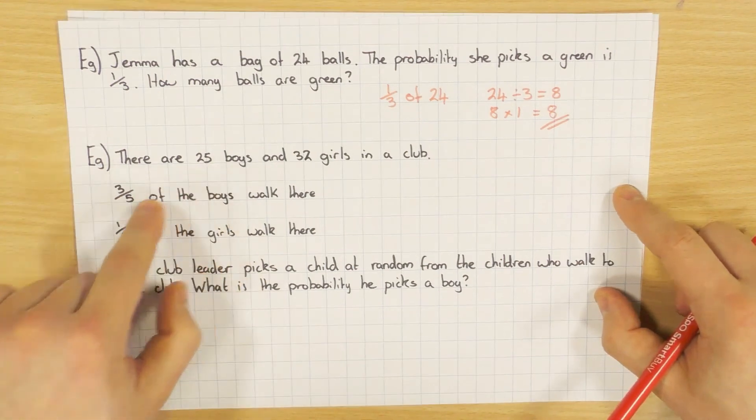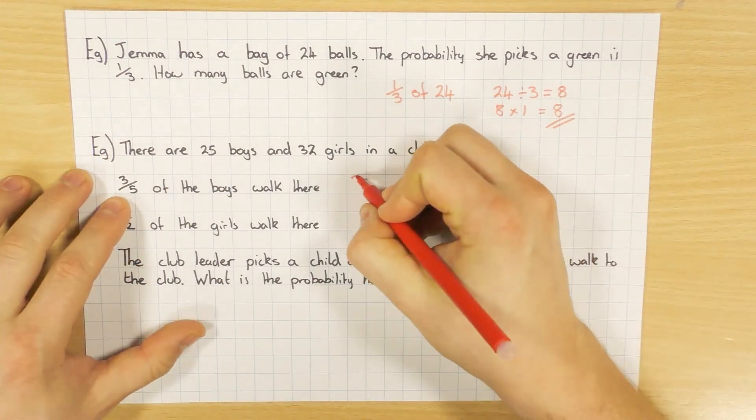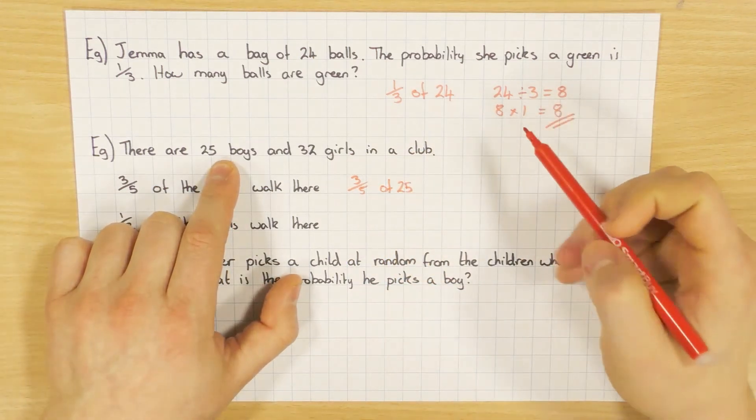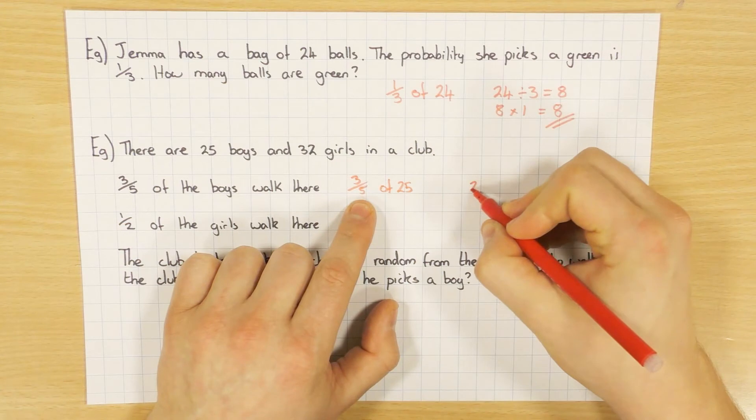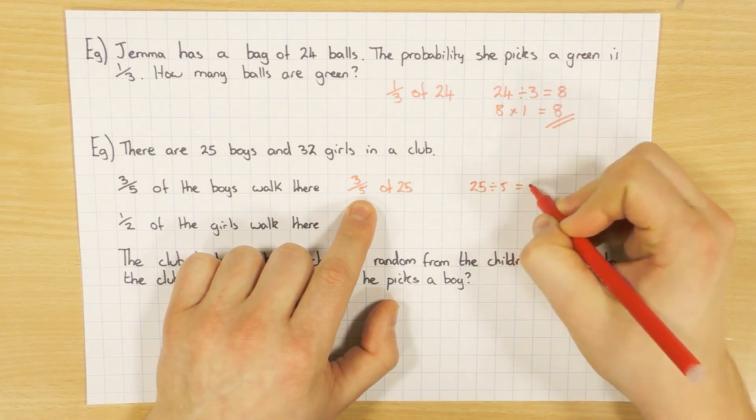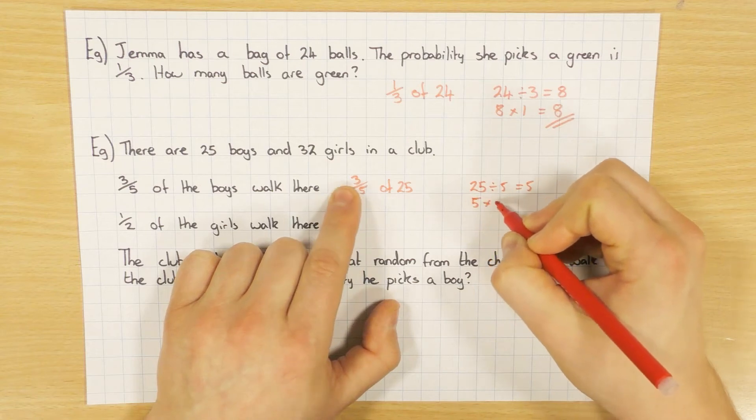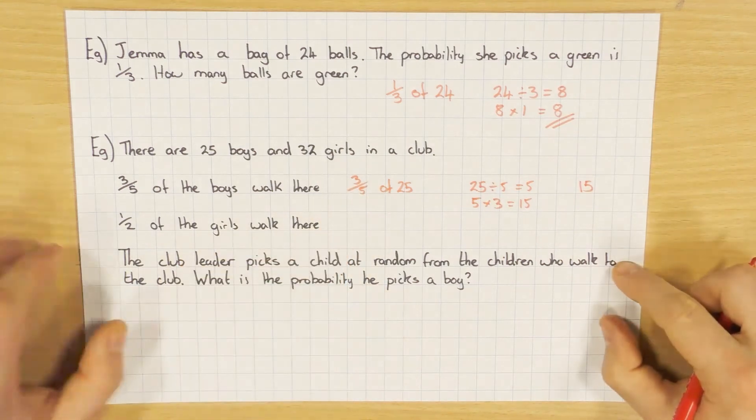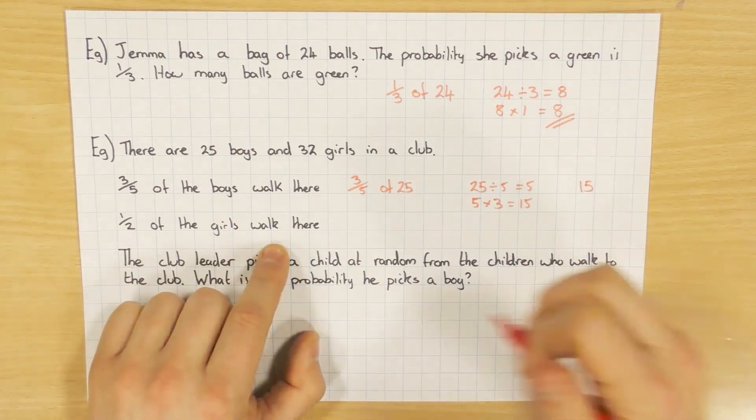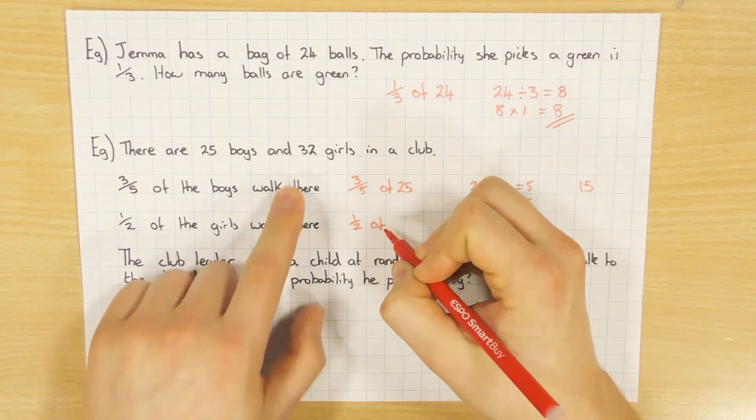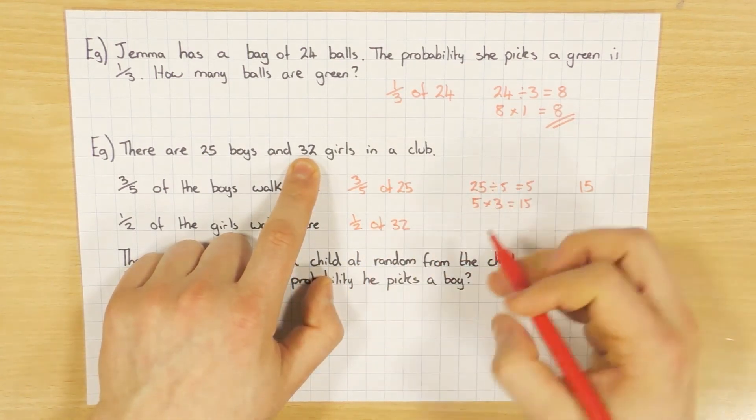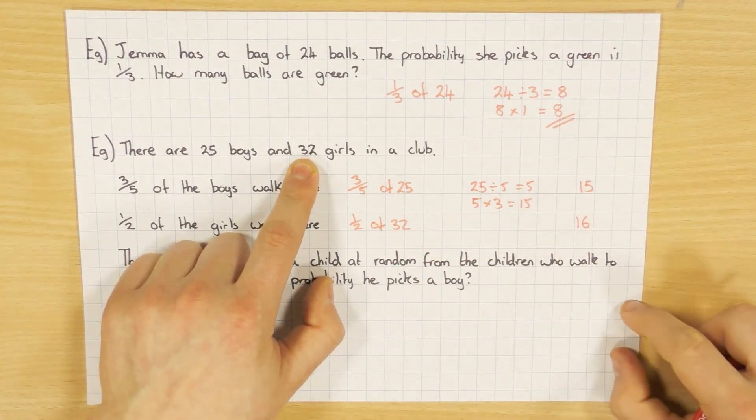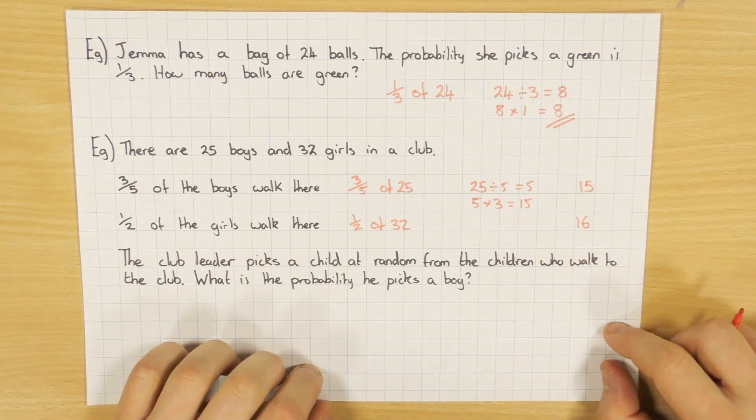The first thing we're going to do is find out three fifths of the boys. Well, there's 25 boys in total. So I need to work out three fifths of 25. I'm going to divide by the bottom. So 25 divided by 5 gives me 5. And I'm going to times my answer by the top. So 5 times 3 is 15. So 15 of the boys walk to the club. And we're told that half of the girls walk there. So a half of 32 is obviously 16. So you probably get a mark awarded for each of them in the real exam.